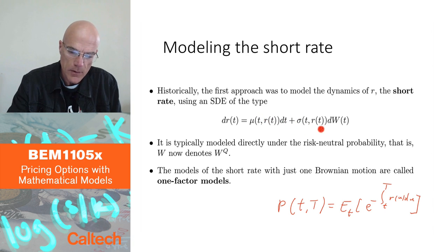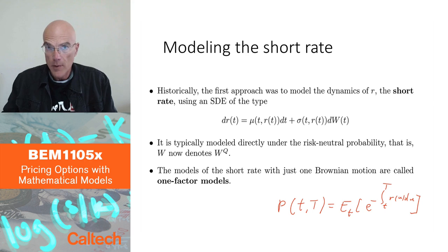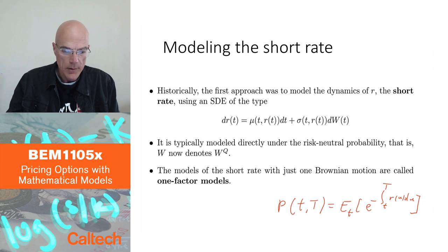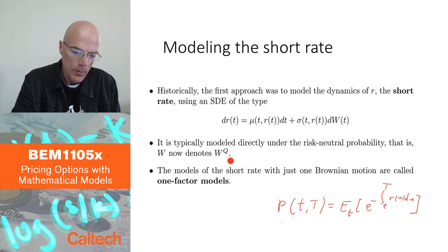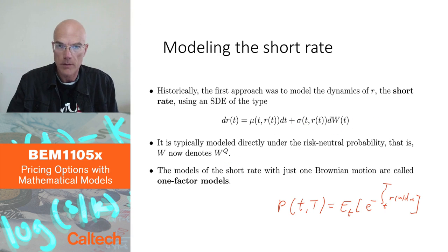plus some deterministic function sigma of t r at t, d w of t, where w is Brownian motion. And again, we are going to model this directly under the risk-neutral probability. So, this w here is what we used to call w q, but I'm not going to write w q. I'm just going to write w. We are modeling directly under the pricing probability.